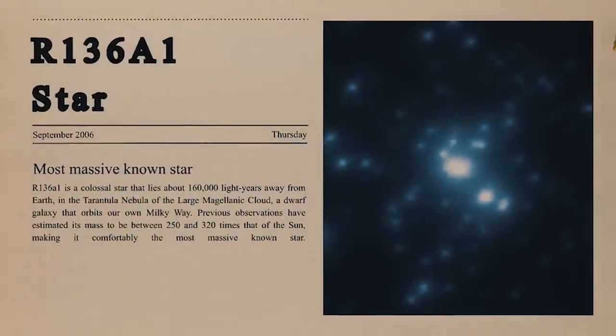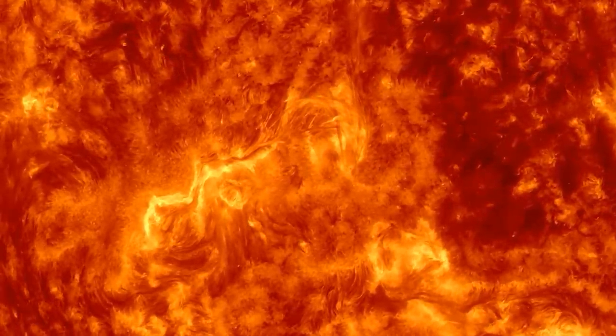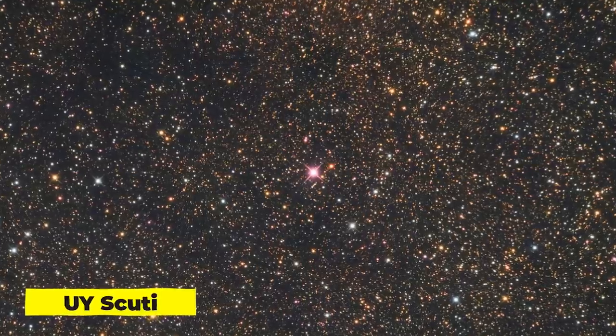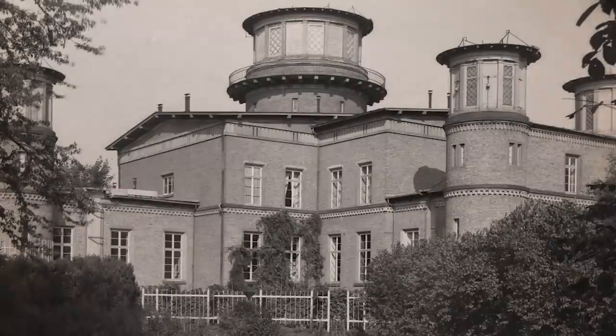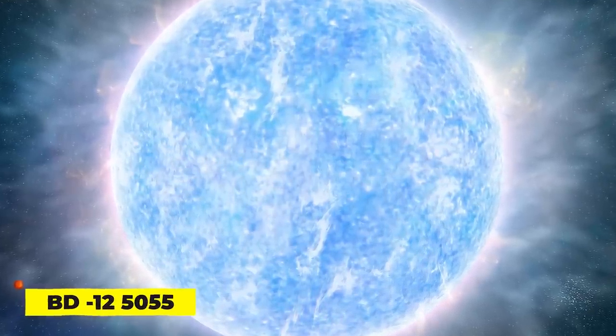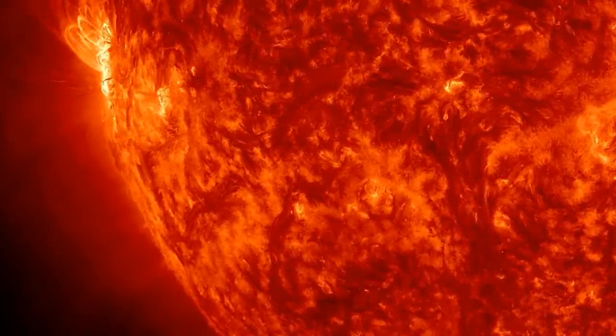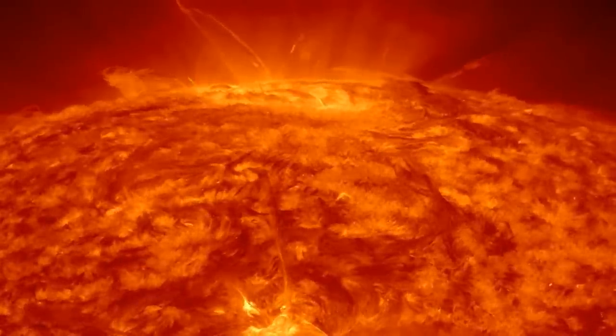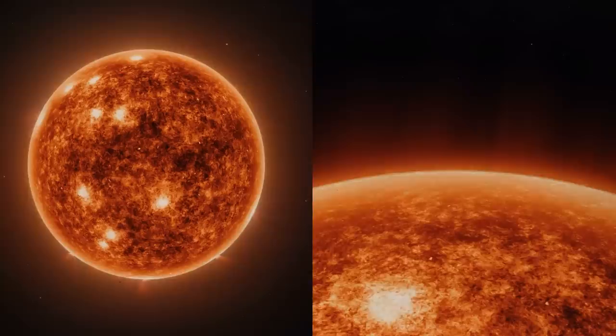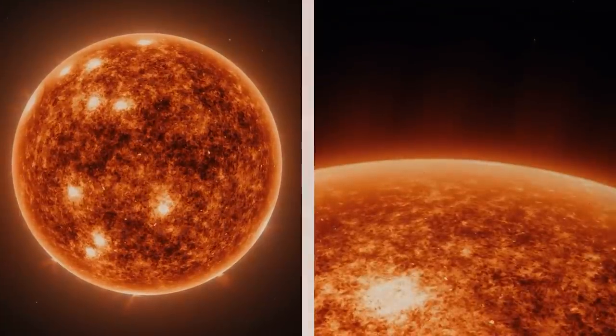This star is also quite young, having lived for only a million years, as opposed to our Sun's 4.5 billion years, and hasn't done any cooling off or expanding. There are several contenders if the definition of the largest star in the universe is the one with the largest diameter, and UY Scuti is at the top of that list. Astronomers at the Bonn Observatory in Germany first noticed it in 1860 and gave it the designation BD-125055. After more observations revealed that BD-125055 changes in brightness and magnitude over the course of 740 days, it was determined to be a variable star. The diameter of this red hypergiant is approximately 1,700 times that of the Sun.